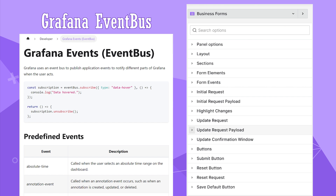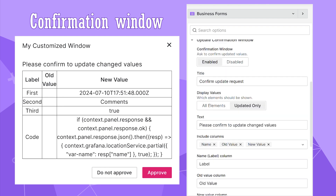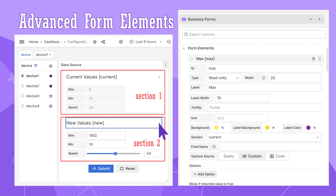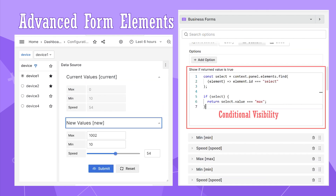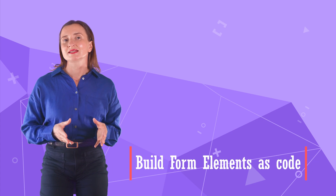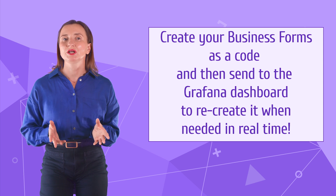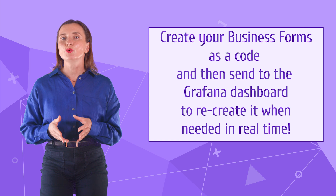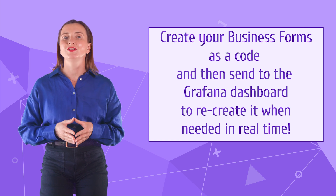You can also create actions to follow Grafana events, react to event bus events, customize the confirmation window, and be particularly intricate with UI elements — having them in sections, hiding or showing them on condition, playing with colors, adding icons, and many other things. One of the most fascinating facts about the Business Forms panel is that all of this can be created dynamically, meaning described in code and submitted to the Grafana dashboard to recreate your business forms on the fly.